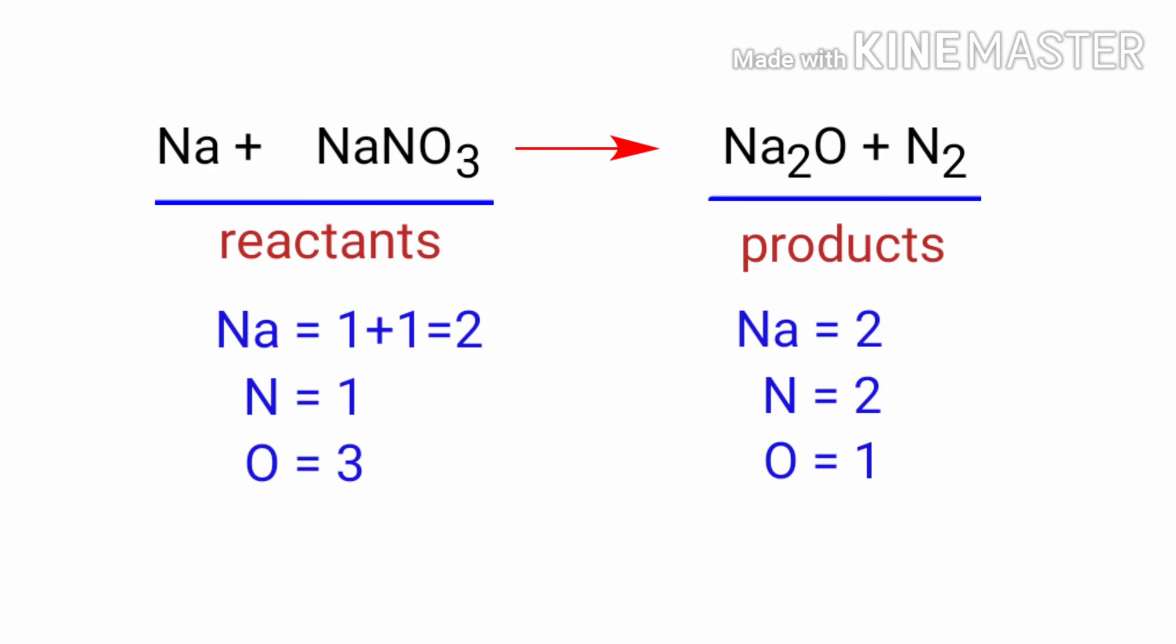In the reactants side, there are two sodium atoms, one nitrogen atom, and three oxygen atoms present. And the products side, there are two sodium atoms, two nitrogen atoms, and one oxygen atom present.